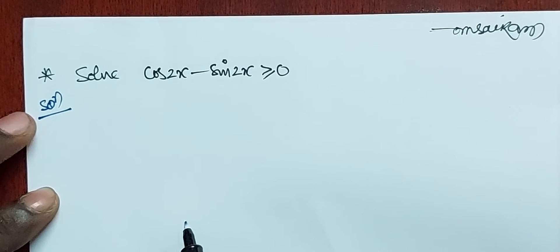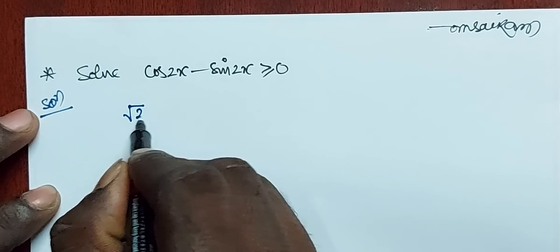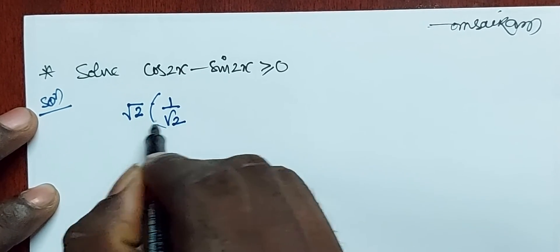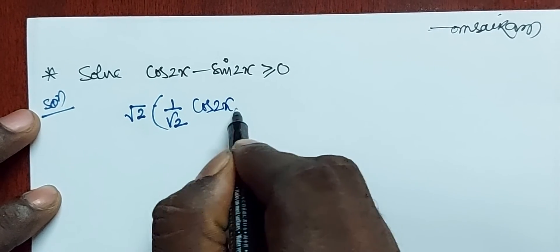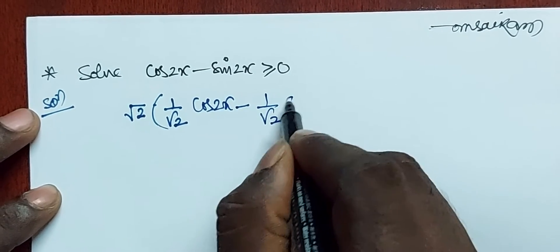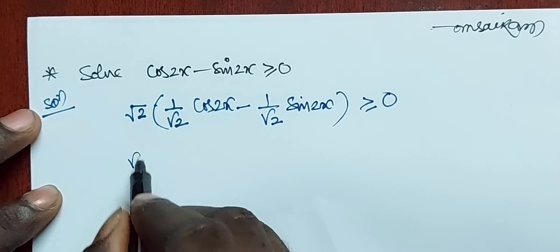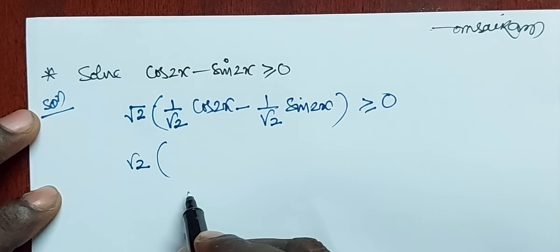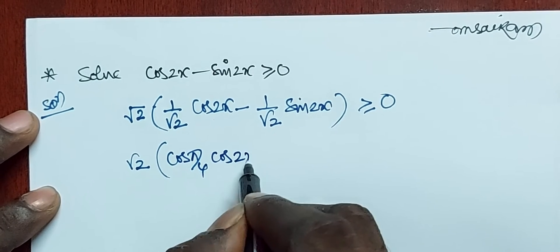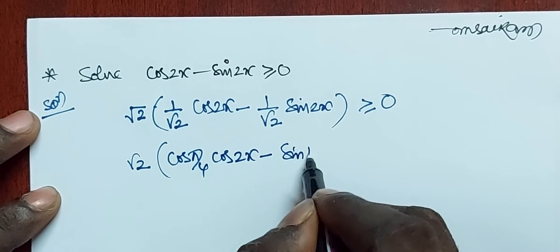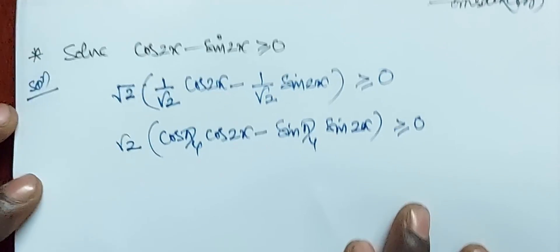Coming to the solution, now multiplying and dividing with root 2, we get root 2 times (1/√2 · cos2x minus 1/√2 · sin2x) ≥ 0. Now 1/√2 is nothing but cos(π/4), and we have cos(π/4)·cos2x minus sin(π/4)·sin2x ≥ 0.